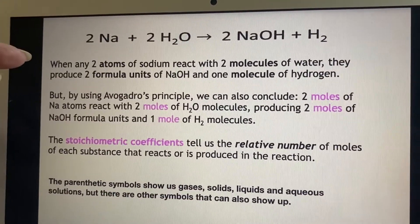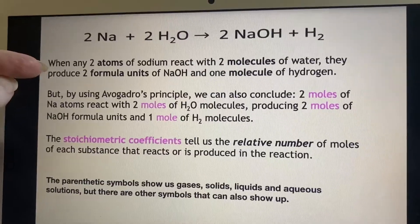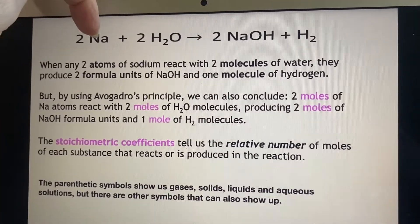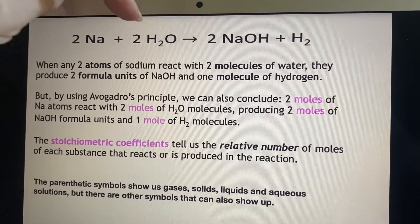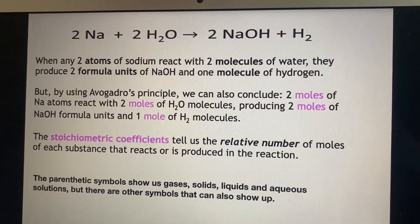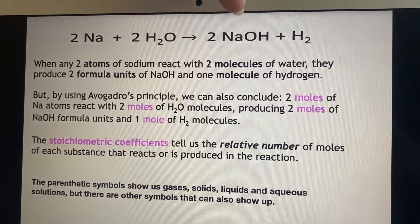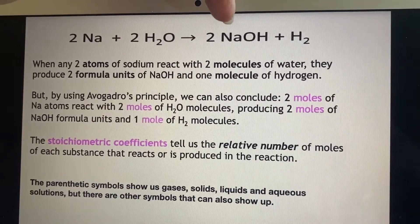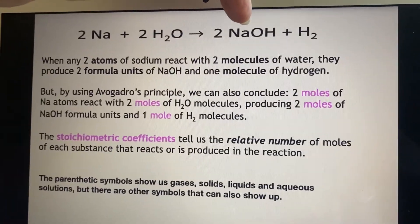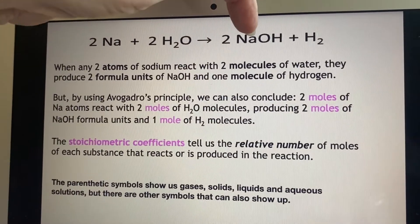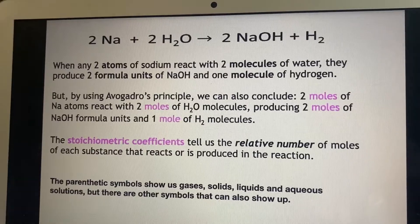Now I can say this in two ways. I can say if two atoms of sodium react with two molecules of water, they'll produce two formula units of sodium hydroxide. I call it a formula unit instead of a molecule because it's ionic in nature, and a molecule of hydrogen.